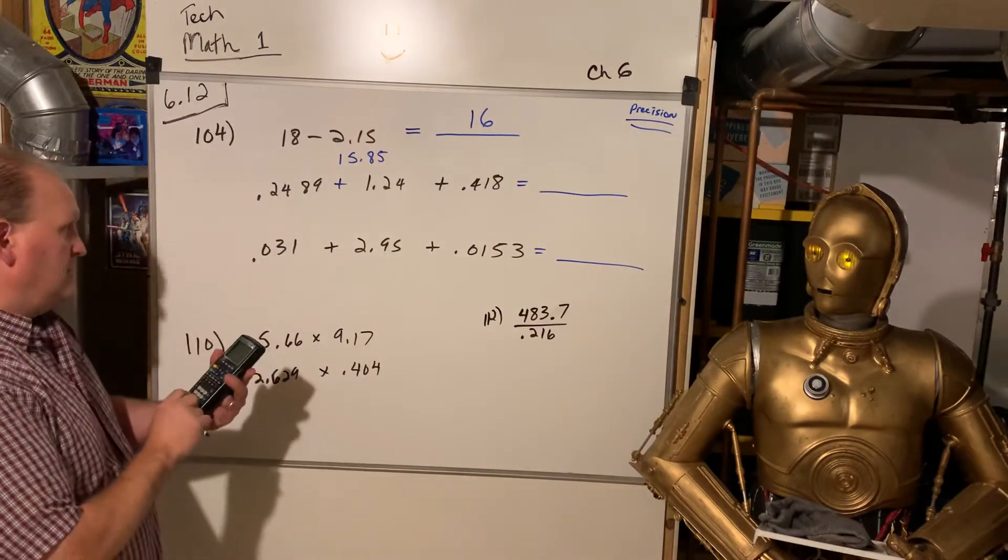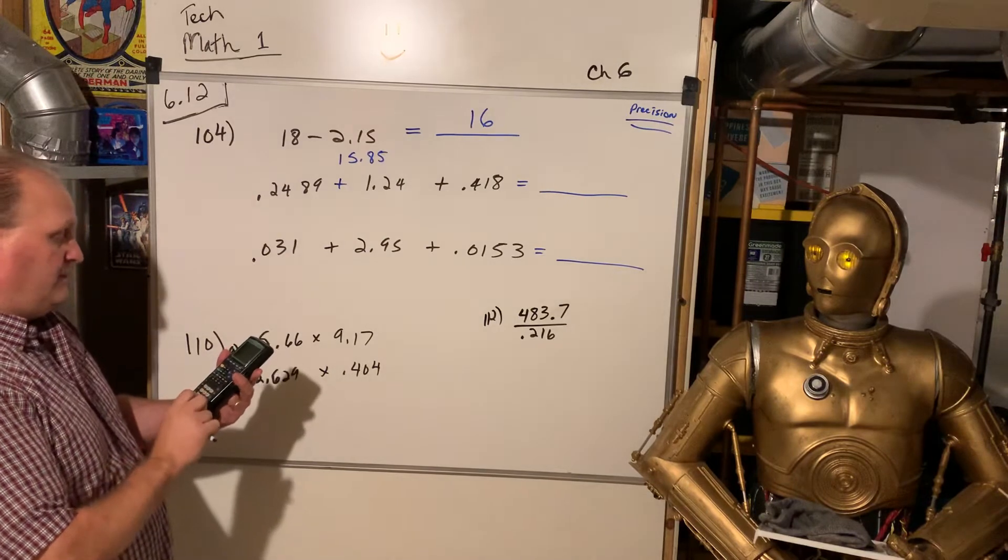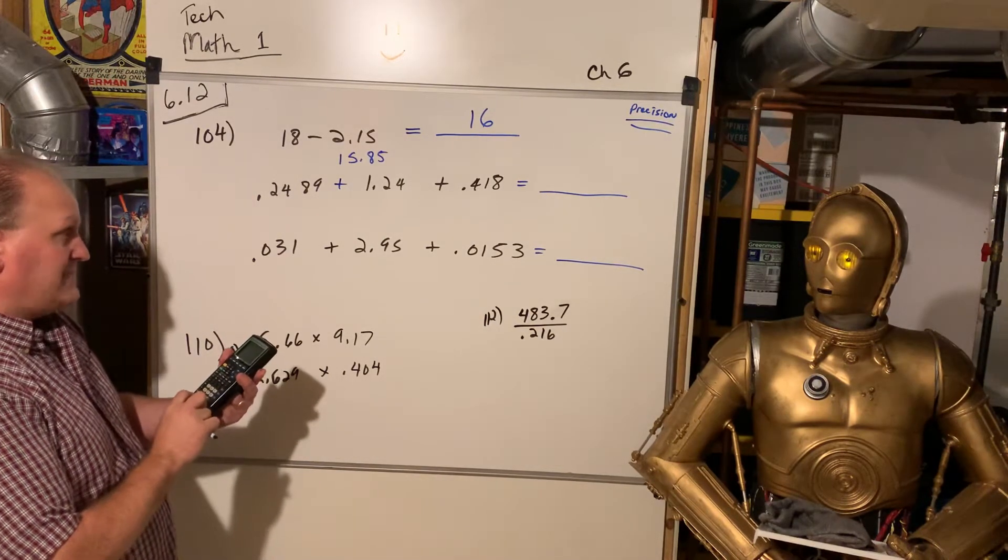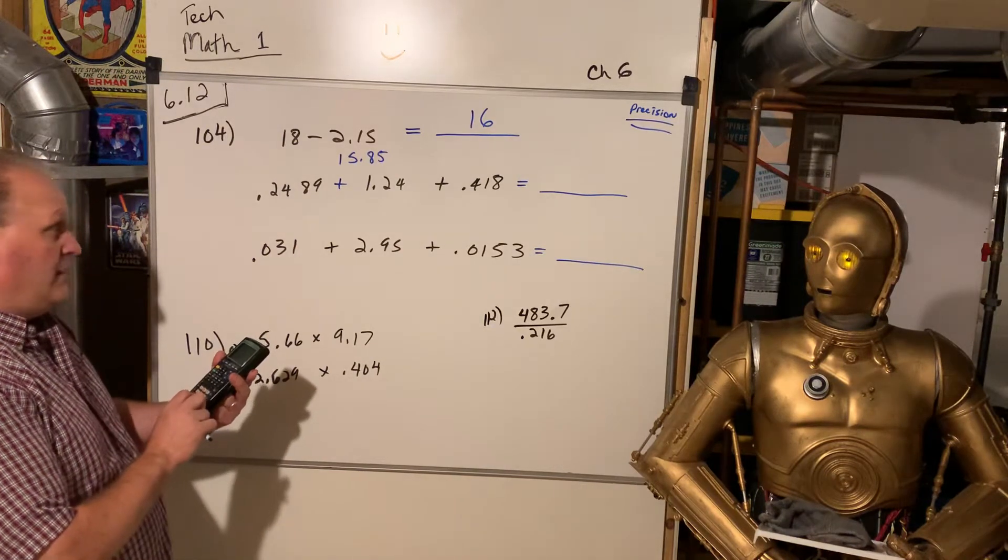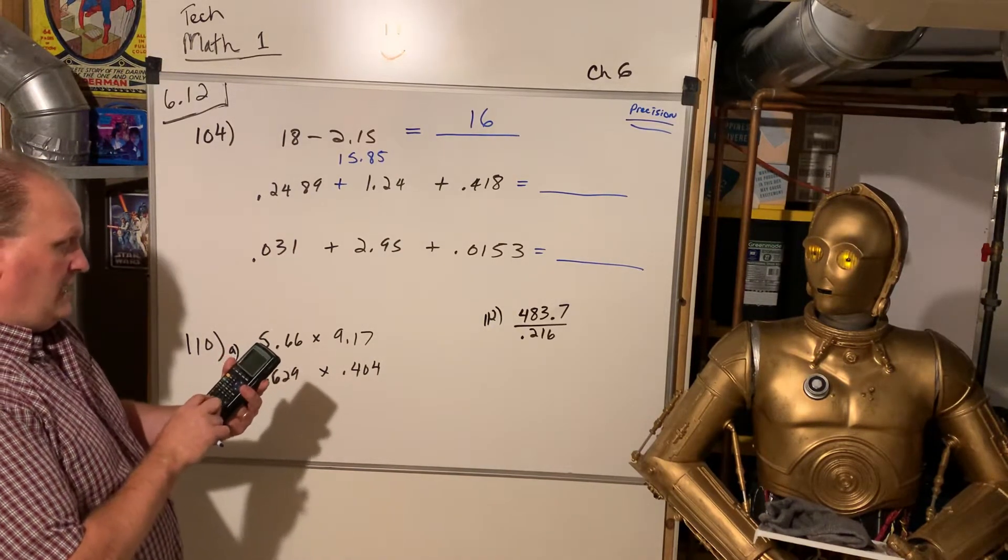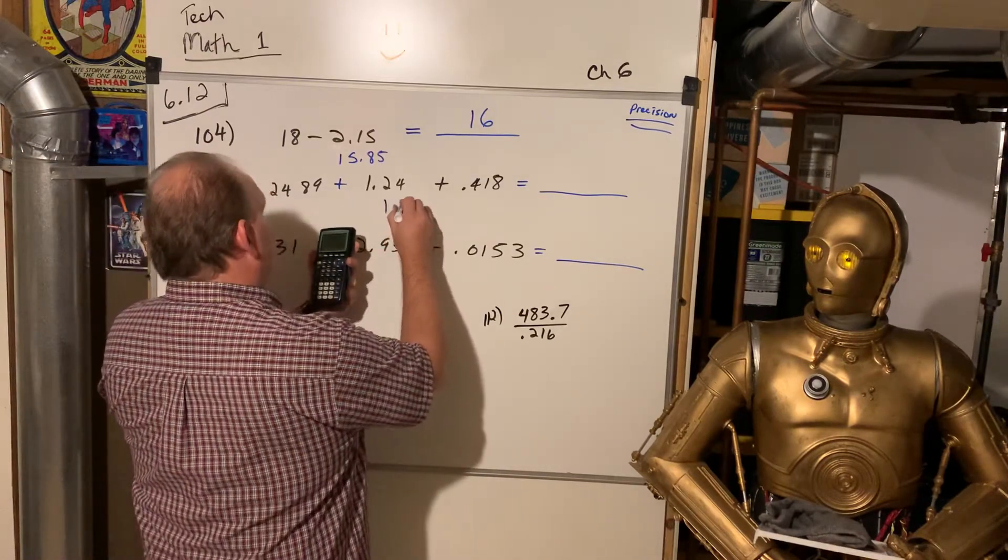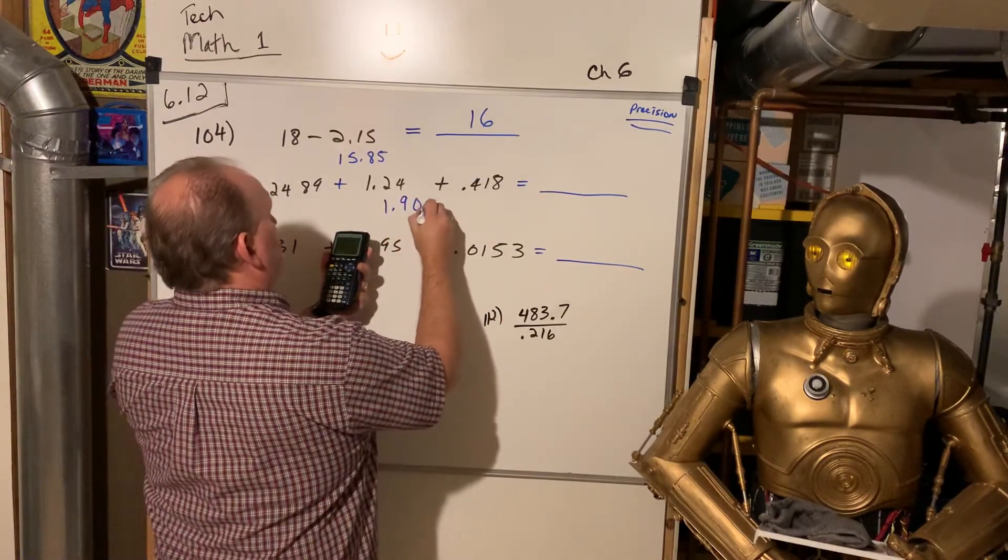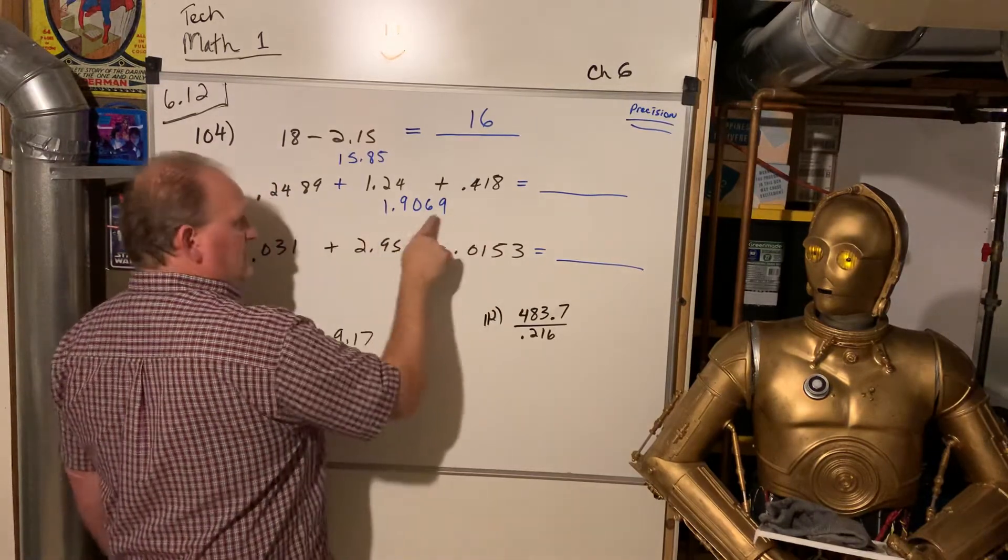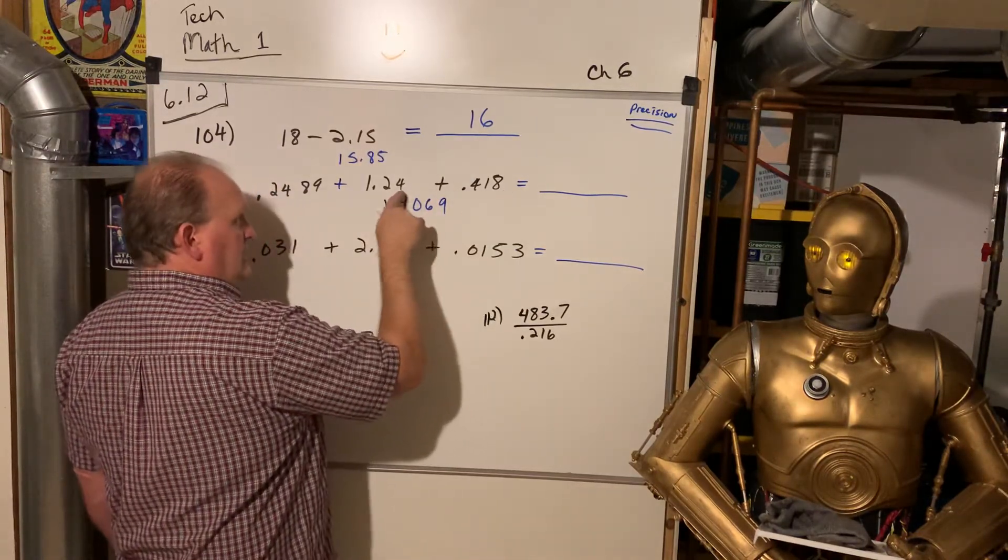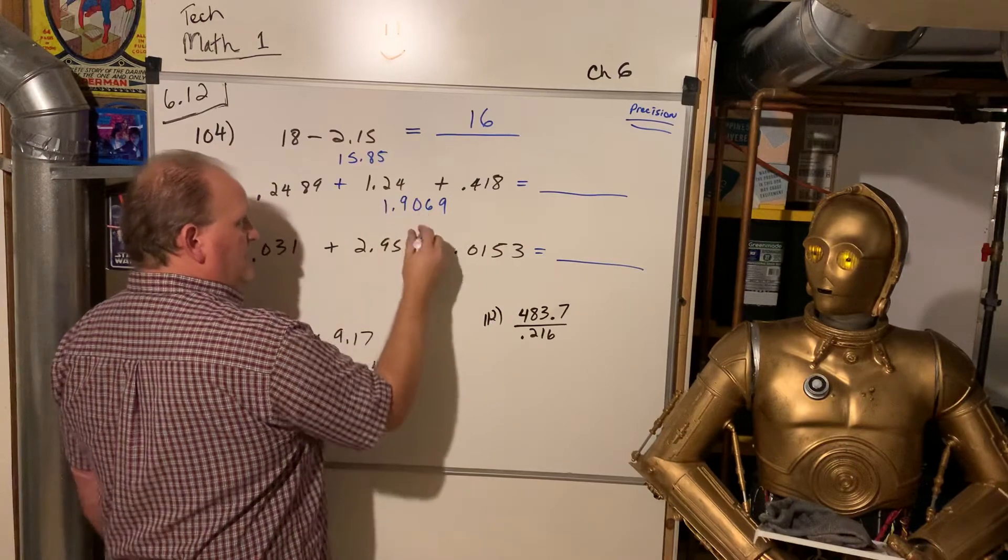Because we don't want to put it in the incorrect preciseness. 1.24 plus 0.418. All right, so we got 1.9069. But, I'm not going out to this place. We're going to the weakest link in the chain here, this one.